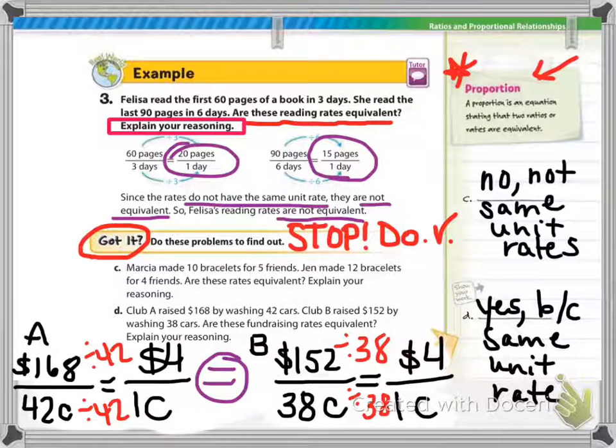So these are equal because they are the same unit rate. If you've copied everything down, then you're ready to move to the next page. If not, pause and finish.